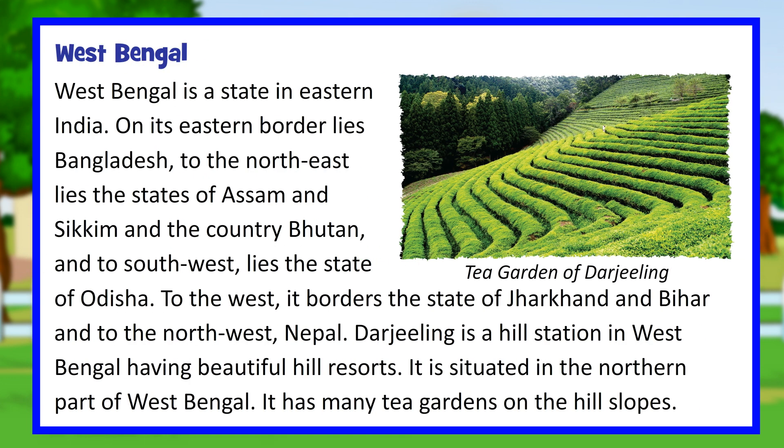West Bengal is a state in eastern India. On its eastern border lies Bangladesh; to the northeast are the states of Assam and Sikkim, and the country Bhutan. To the southwest lies Odisha, and to the west are Jharkhand and Bihar; to the northwest lies Nepal. Darjeeling is a hill station in the northern part of West Bengal, known for beautiful hill resorts and tea gardens on its hill slopes.